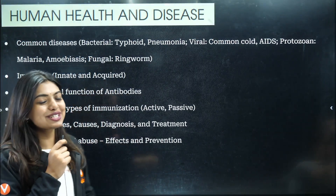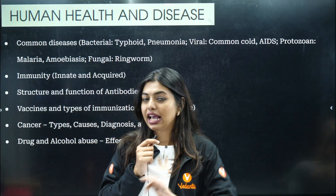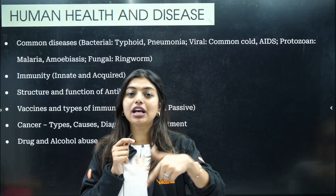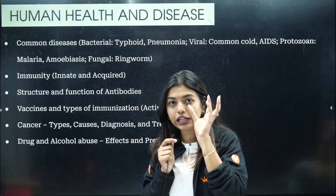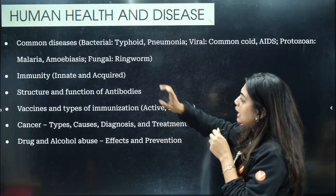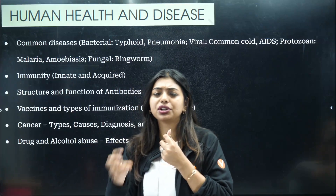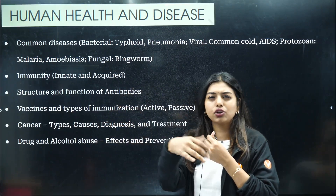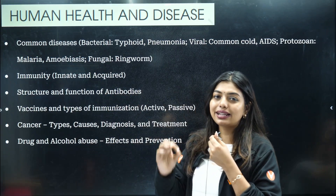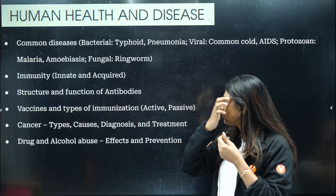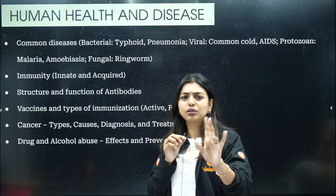Moving forward — human health and diseases. All the diseases are important. You should mainly know the symptoms. They will not directly ask you the disease — they will give you the symptom and ask you to identify the disease. I have done an individual video about all the diseases, please check that out. Immunity — innate and acquired. They will ask the types of innate immunity. For acquired immunity, they will directly ask you the structure of antibodies — that is the most repeated diagram. Vaccine and types of immunization — learn the definition; read it once and you will be able to answer.